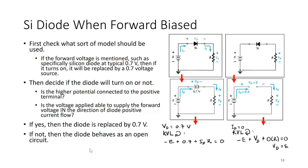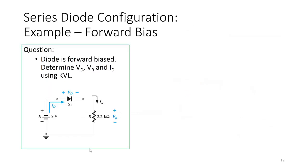This is where we stopped in Part 1. Picking up from here, we are now ready to do actual values and examples. This is a simple circuit consisting of a diode with a voltage source of 8 volts and a resistor of 2.2 kilohms. This diode is in forward bias because it is in the direction of positive current flow.